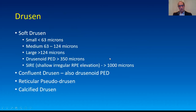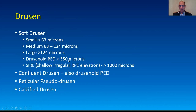We'll go over this repeatedly. There are soft drusen — small, medium, and large, which are different sizes. Then there are drusenoid PEDs, which are 350 microns across. And then there's a new entity: shallow irregular RPE elevations, which are graded at 1,000 microns across.